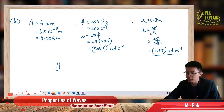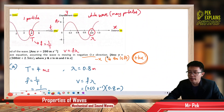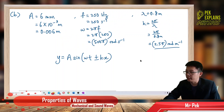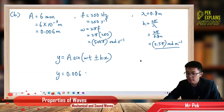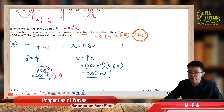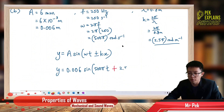Now we just put them into the general formula: y = A sin(ωt ± kx). The direction is to the left, so to the left is positive kx — I must change to positive. So: y = 0.006 sin(500π t + 2.5π x). Positive kx because the wave is moving to the left.